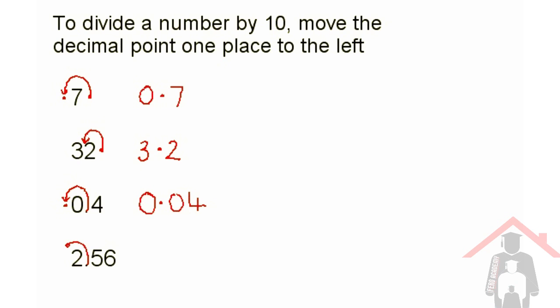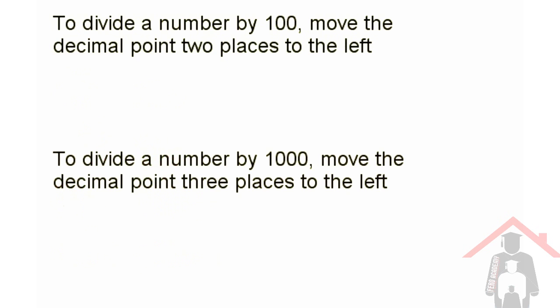Move it one place to the left and we have 0.256. Don't forget to put the zero at the front. When we divide by 100, because of the two zeros, we move the decimal point two places to the left. When we divide by 1,000, because of the three zeros, we move the point three places to the left.